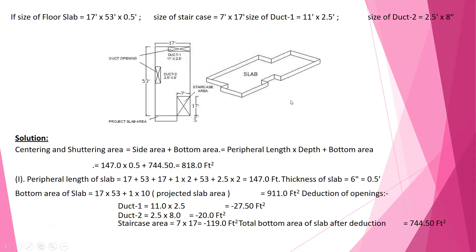For a slab of 17 feet by 53 feet with 5-foot height, there are two staircases (one 7 feet by 17 feet) and two ducts — duct one at 11 feet by 2 feet 6 inches, duct two at 2 feet 6 inches by 8 inches. Shuttering area equals side area plus bottom area, that is peripheral length into depth plus bottom area. That means 147 into 0.5 plus 744, giving 818 square feet total.